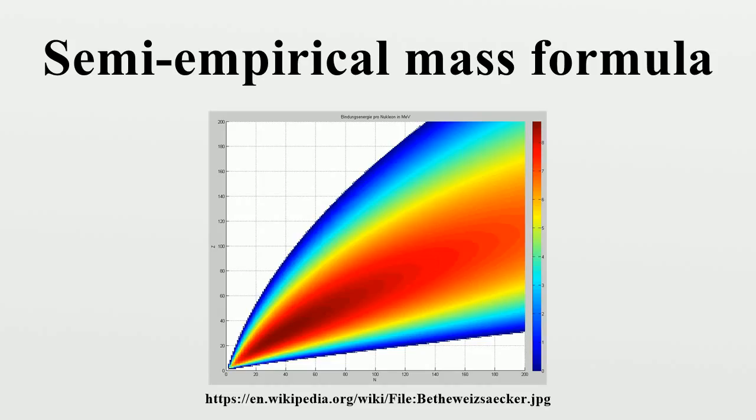Surface term: The term -aS·A^(2/3) is known as the surface term. This term, also based on the strong force, is a correction to the volume term. The volume term suggests that each nucleon interacts with a constant number of nucleons, independent of A. While this is very nearly true for nucleons deep within the nucleus, those nucleons on the surface of the nucleus have fewer nearest neighbors. Justifying this correction, this can also be thought of as a surface tension term, and indeed a similar mechanism creates surface tension in liquids.